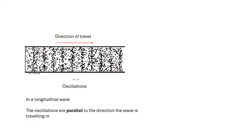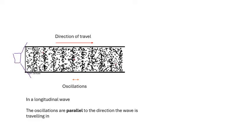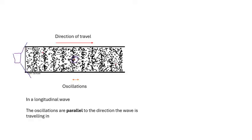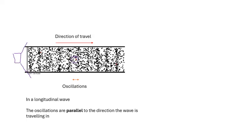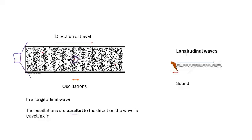In longitudinal waves, the main example we need to know is sound. A loudspeaker pushes air molecules together, creating compressions — regions of high pressure — that travel as waves through the air. The particles oscillate parallel to the direction the wave is traveling. You can also make longitudinal waves with a slinky, but sound is the key example.